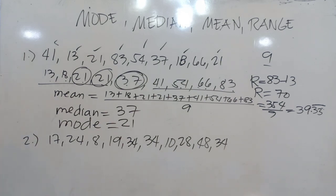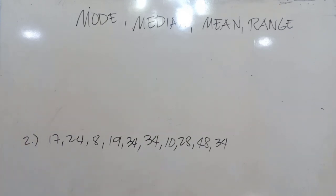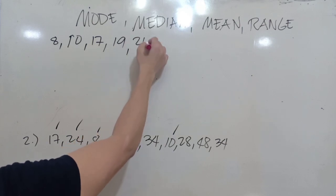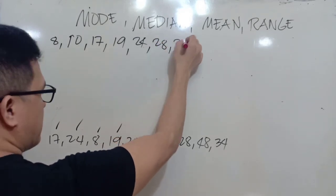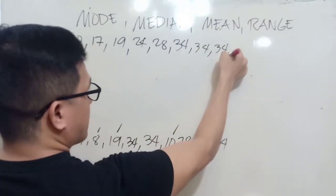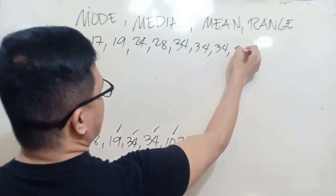Let's go to number 2. As you can see here on the board, we have 17, 24, 8, 19, 34, 34, 10, 28, 38, 48, and 34. So let's arrange this one first. Let's just arrange this one first from the lowest to highest.